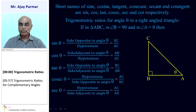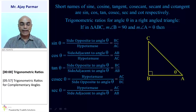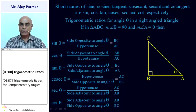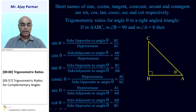Sec theta is the inverse of cos theta, that is hypotenuse upon side adjacent to angle theta — that is AC upon AB. Cot theta is the inverse of tan theta, that is the side adjacent to angle theta upon the side opposite to angle theta — that is AB upon BC. It is very necessary that you remember these trigonometric ratios in terms of the sides of a right-angled triangle.